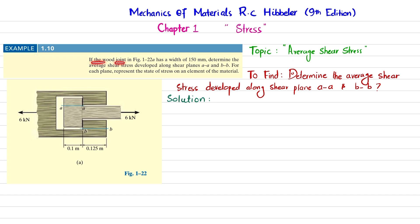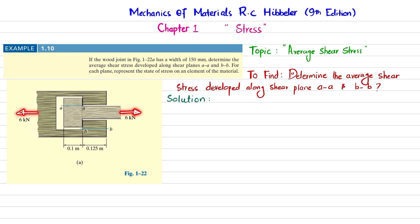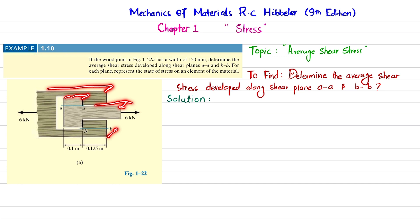The problem statement is: if the wood joint in figure 1-22A has a width of 150 mm, determine the average shear stress developed along the shear planes at A-A and B-B. For each plane, represent the state of stress on the element of the material. The load acting is 60 kN and the width of 150 mm applies to both sections.